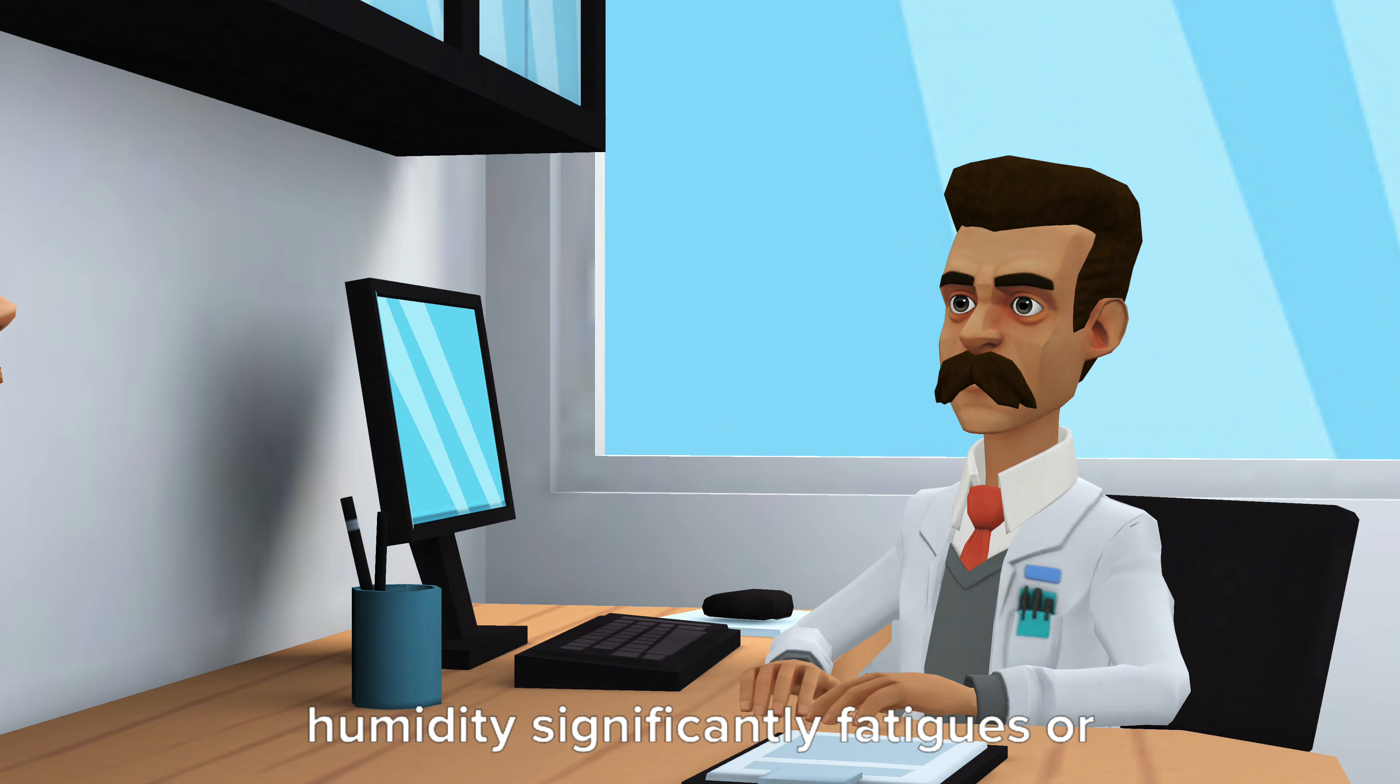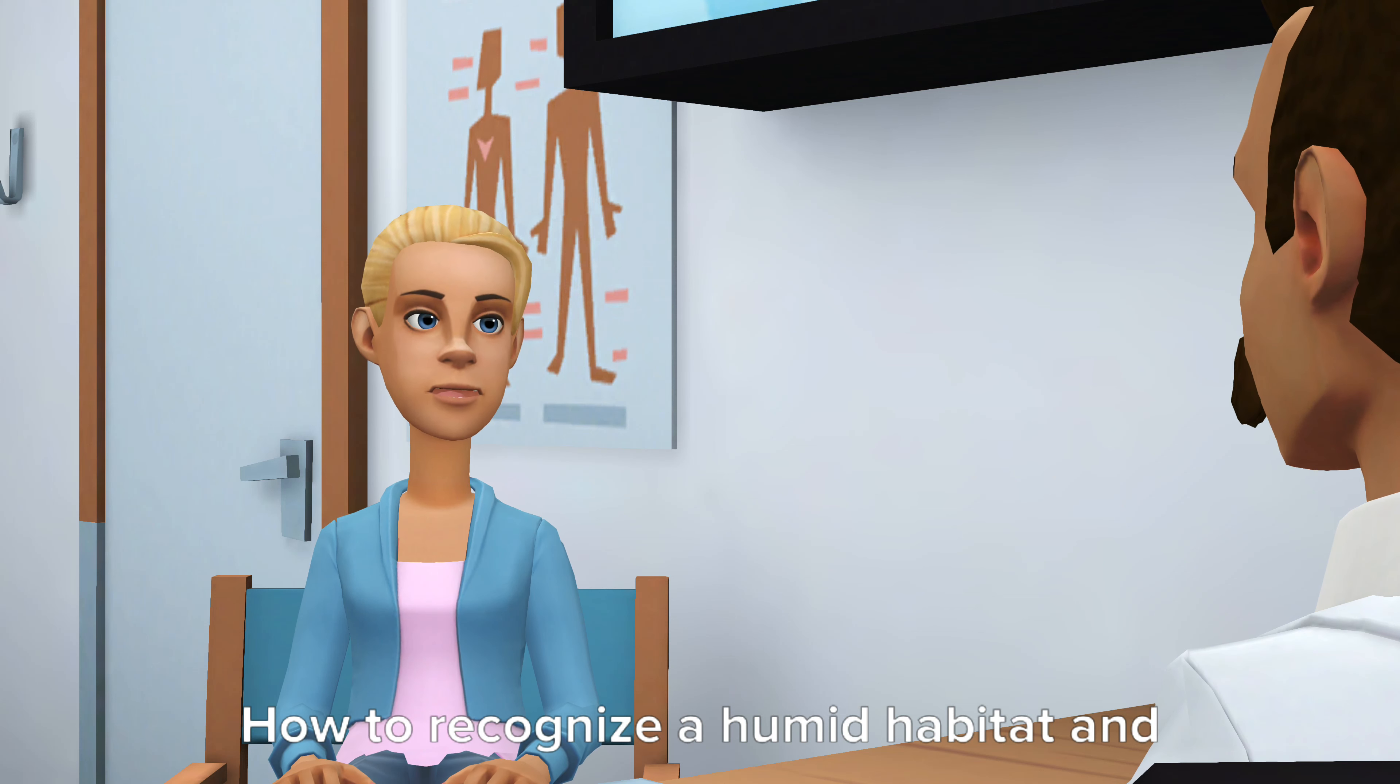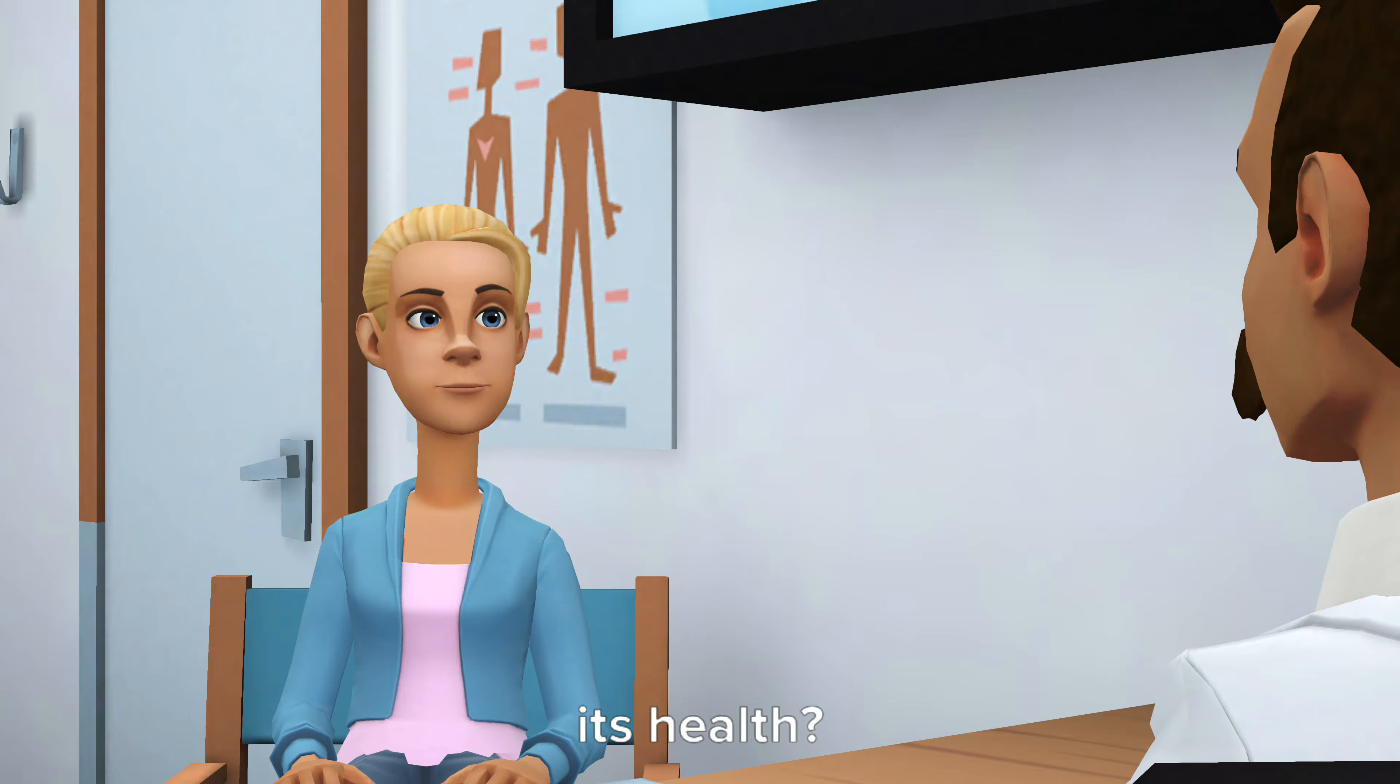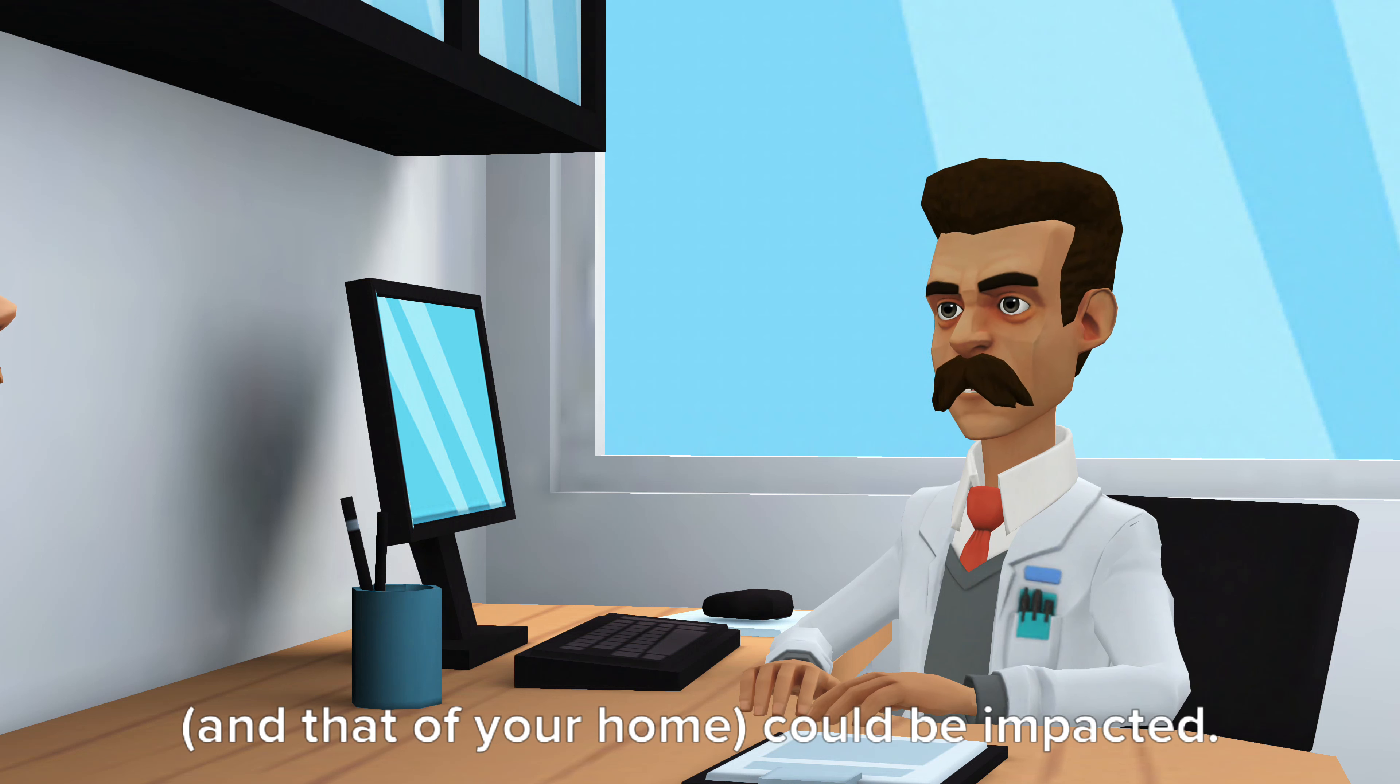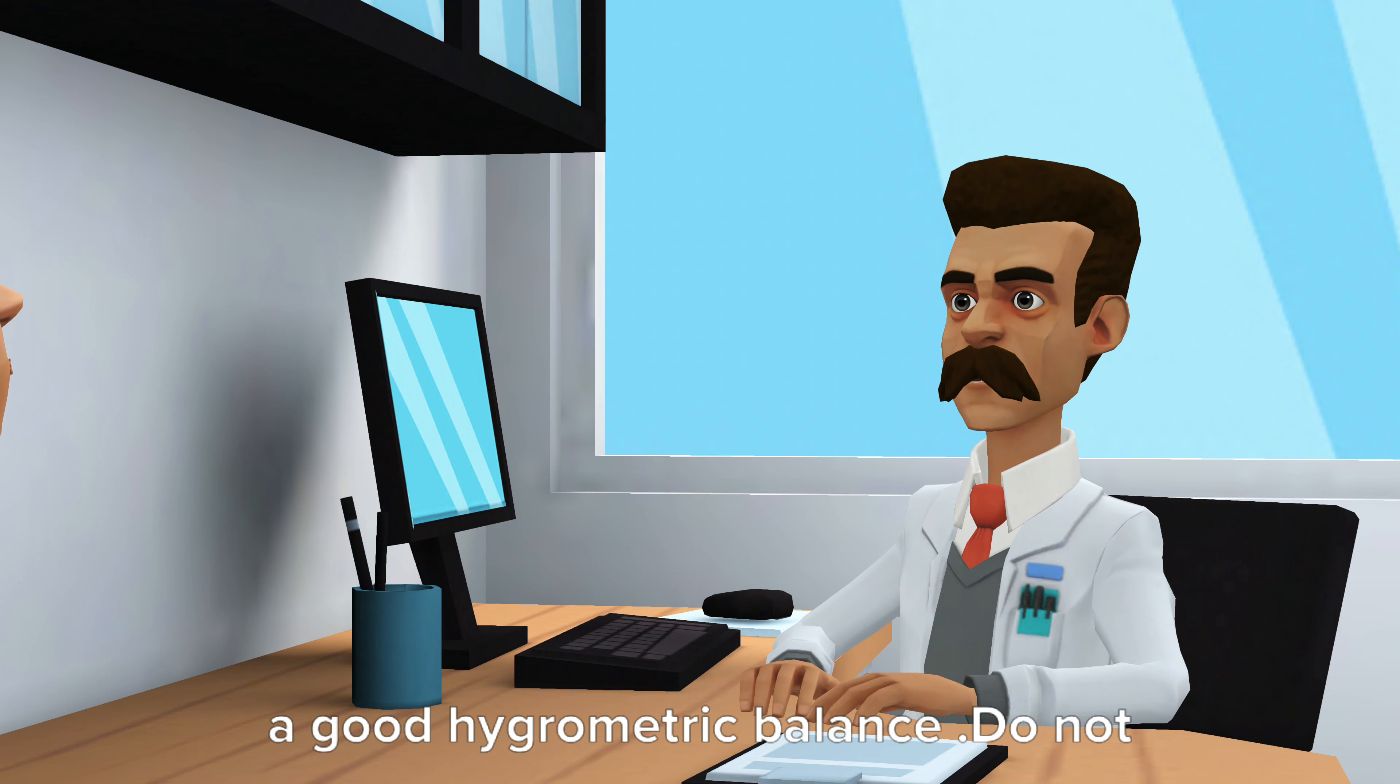There is no clear consensus on whether humidity significantly fatigues or weakens the immune system. How to recognize a humid habitat and eliminate excess humidity to protect its health? The ideal humidity level is generally between 45% and 65%. Outside of this interval, your health and that of your home could be impacted. It is therefore essential to maintain a good hygrometric balance.